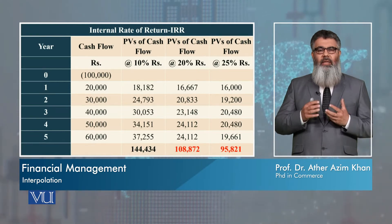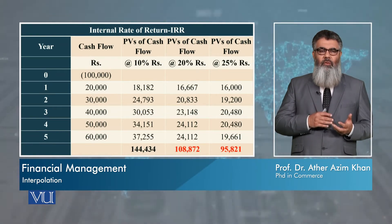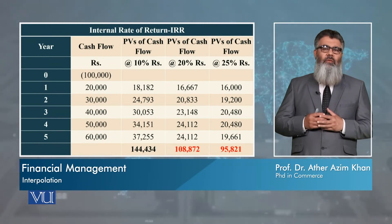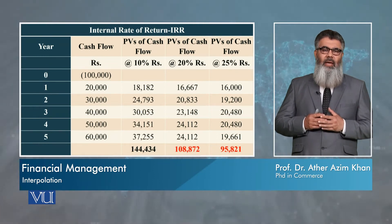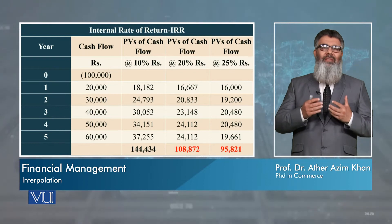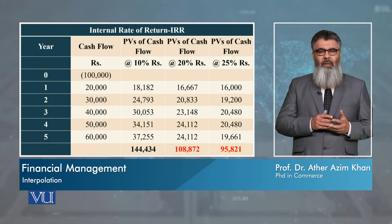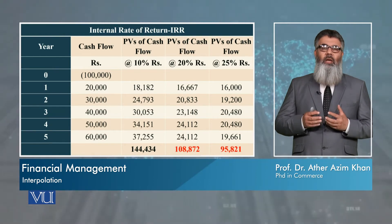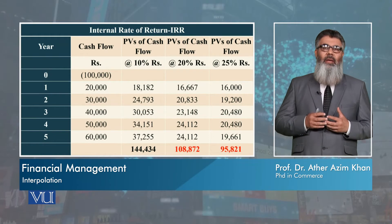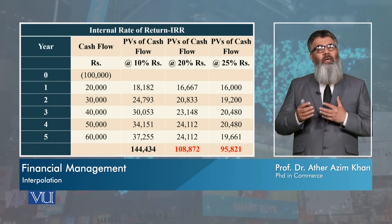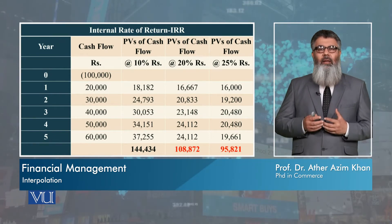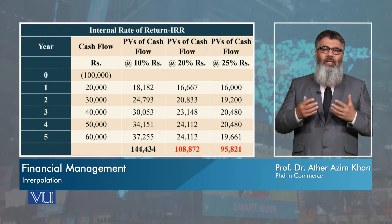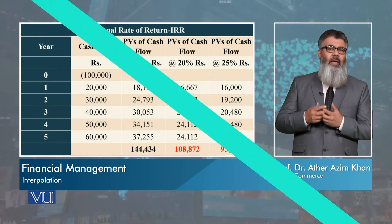This means our IRR is less than 25%, since at 25% cash inflows are below 100,000. At 20%, cash inflows are more than 100,000, so our IRR is more than 20%. We now have to interpolate between 20% and 25%, and after interpolation we can determine the exact IRR value.